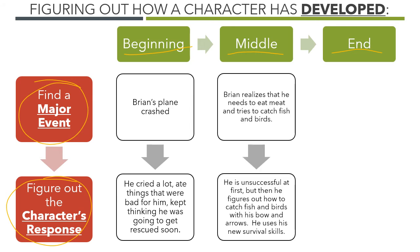Here in the middle, we have an event we just read about. Brian realizes that he needs to eat meat, so he tries to catch fish and birds — that was a big event for Brian. In this part of the story, he's unsuccessful at first, but then he figures out how to catch fish and birds with his bow and arrows and also with the spear that he created. He uses his new survival skills. Notice how Brian didn't just cry that he was hungry or eat things that were bad for him — he had a different response in the middle. He's changed. Now he doesn't give up and he keeps trying.